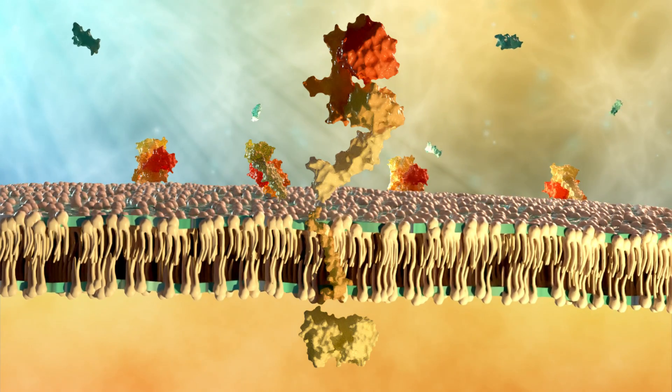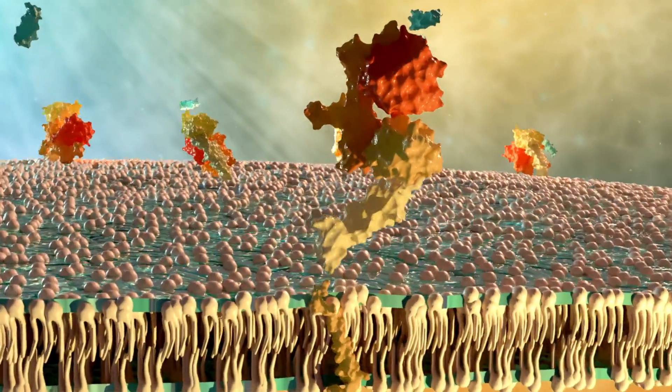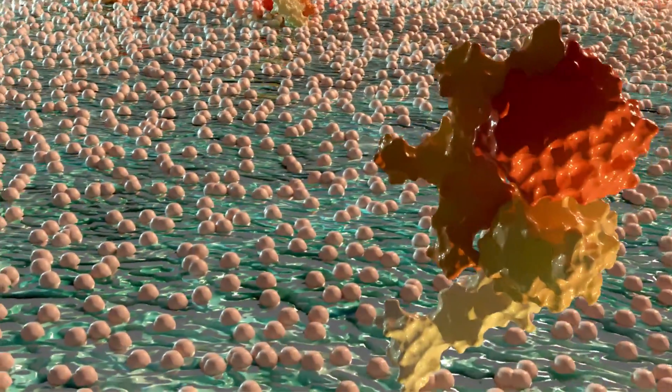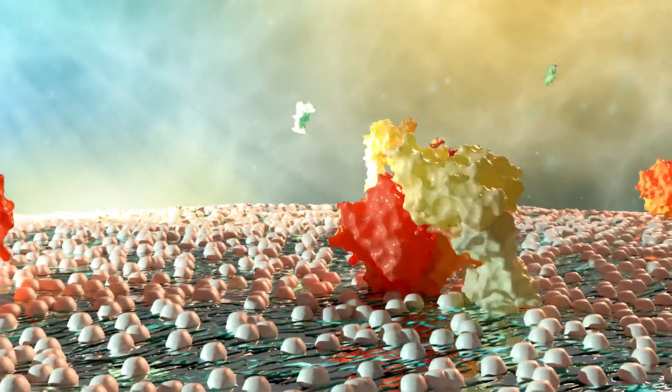The EGFR, a type 1 single-pass transmembrane protein, contains a large N-terminal extracellular module comprised of four domains. The extracellular module of EGFR exists in primarily one of two conformational states.